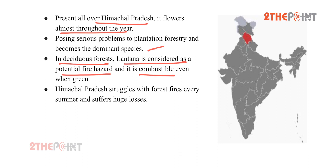Himachal Pradesh struggles with forest fires every summer and suffers huge losses. This weed is also dangerous in national parks and sanctuaries. The government has faced failure in uprooting this issue, and it has now entered the fields and orchards of farmers, where marginal farmers are forced to quit agriculture due to this problem.